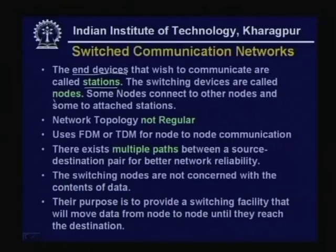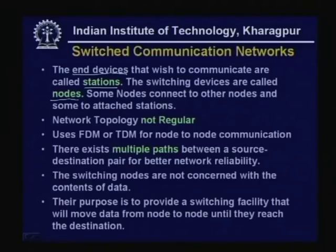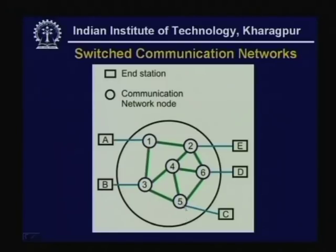The switching devices are called nodes — we use additional intermediate devices known as nodes. Some nodes connect to other nodes and some nodes are attached to stations. Here you can see end stations A, B, C, D, E, and on the other hand nodes 1, 2, 3, 4, 5, 6 are communication network nodes used as switches and intermediate points for communication.